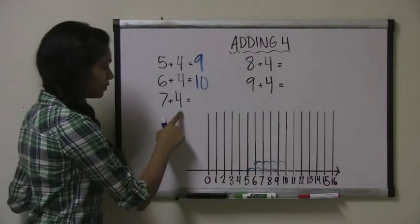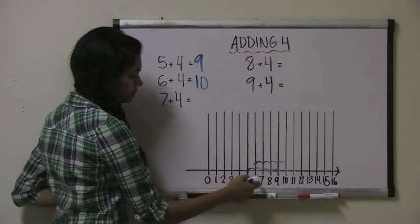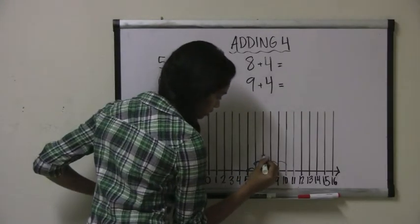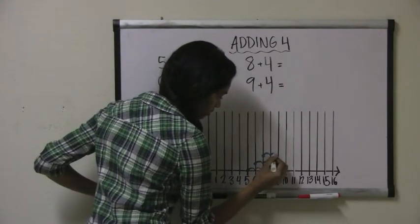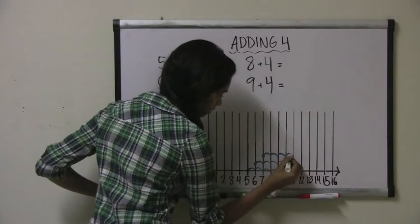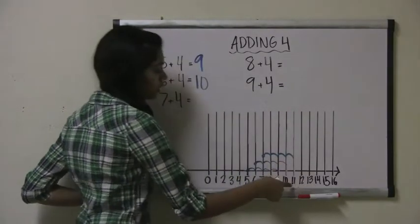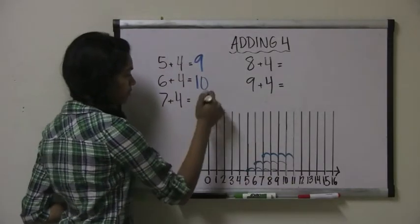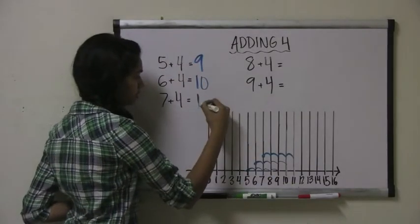Let's try 7 plus 4. Start with the number 7 and jump 4 spots: 1, 2, 3, 4. We land on 11, so 7 plus 4 equals 11.